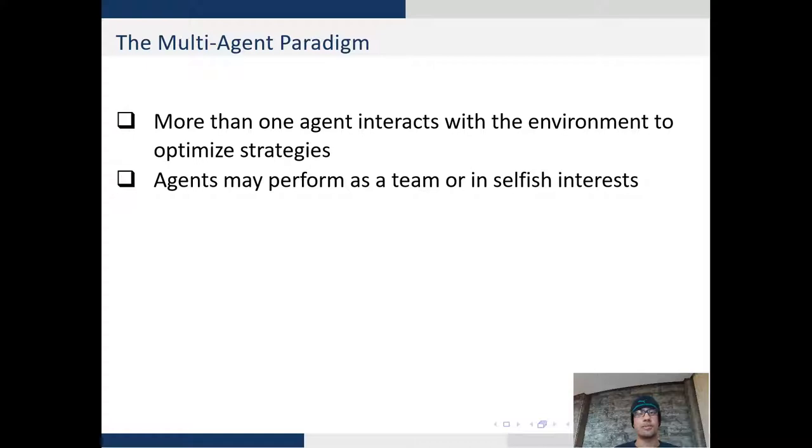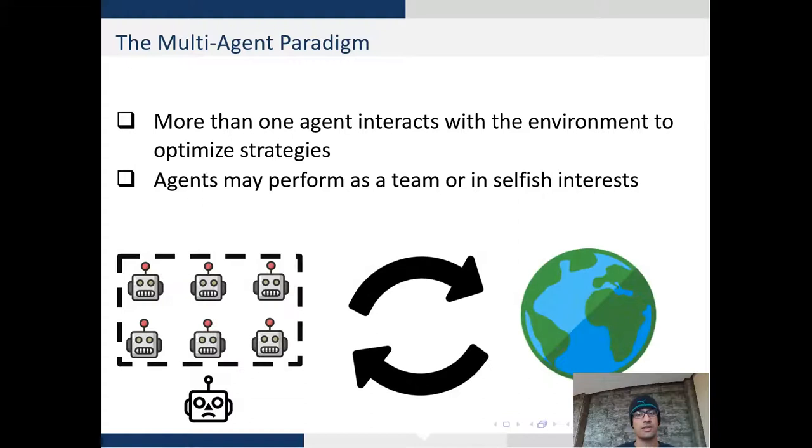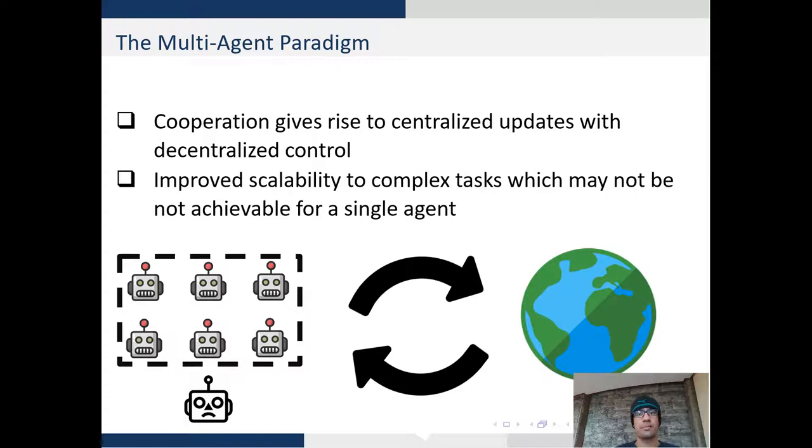So what is multi-agent reinforcement learning? We basically deal with the problem of multiple agents in the environment which interact simultaneously. Agents can perform as a team or in selfish interests. The only essential component is that there are multiple agents at the same given time step.